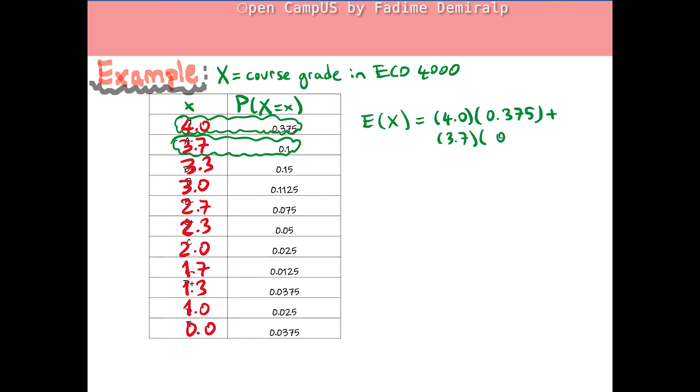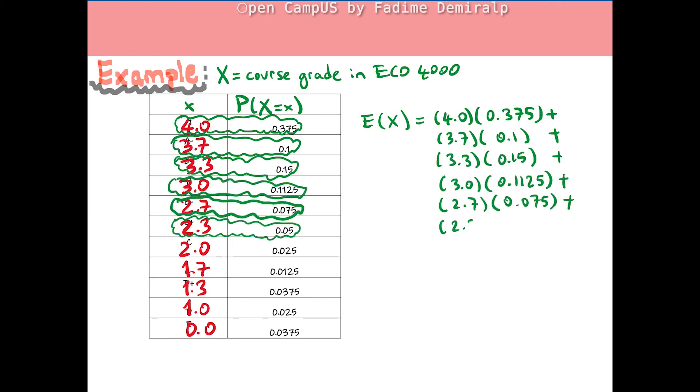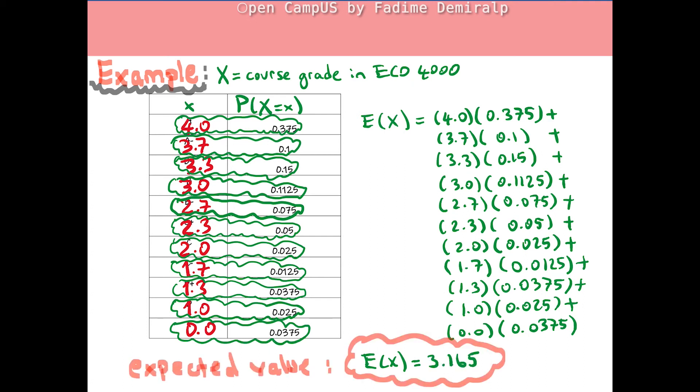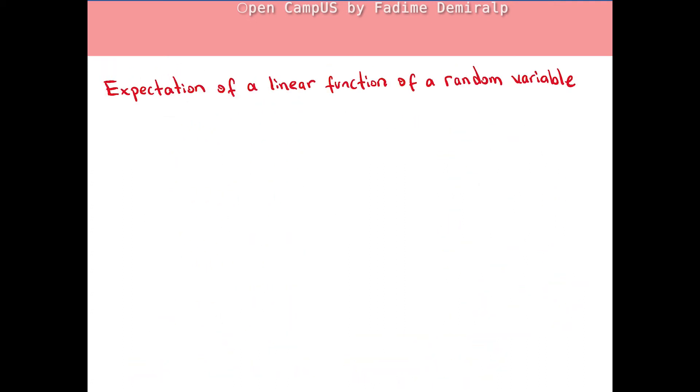Plus 0 times 0.0375. Therefore, the expected value is 3.165. We have discussed the expected value formula for a discrete random variable followed by an example.